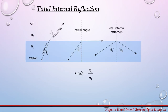Total internal reflection happens when a ray of light strikes a medium boundary at an angle larger than a particular critical angle with respect to the normal of the surface. If the refractive index is lower on the other side of the boundary, no light can pass through and all of the light is reflected.